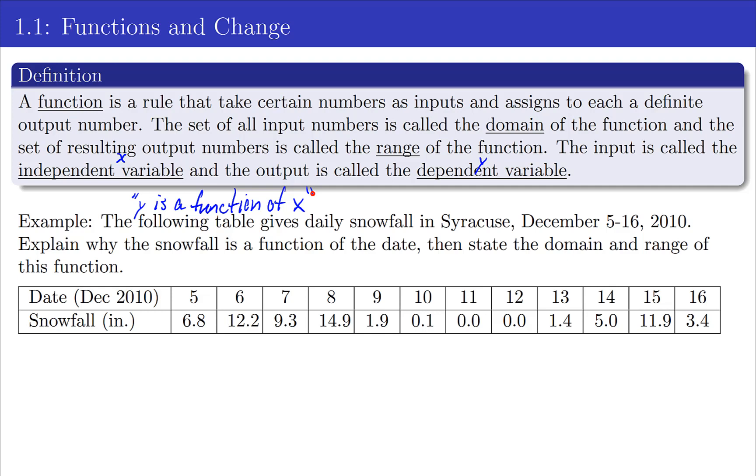Now let's take a look. We've got the table of snowfall in Syracuse, December 5th through 16th of 2010. Explain why the snowfall is a function of the date. Remember, y is a function of x, so y is the snowfall and x is the date. For every x, if we get a unique y, we're good.